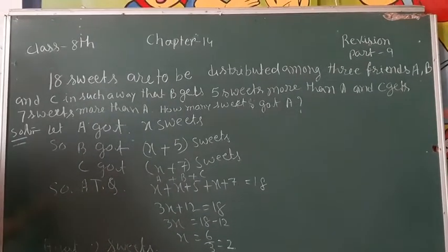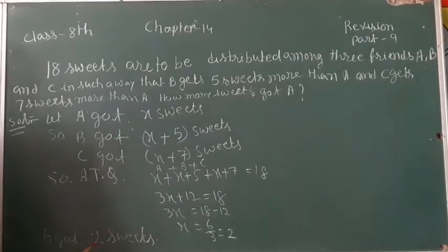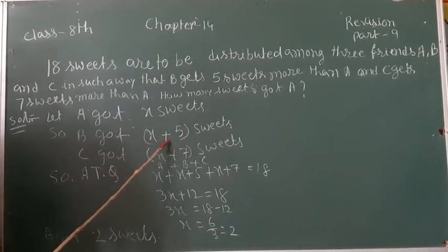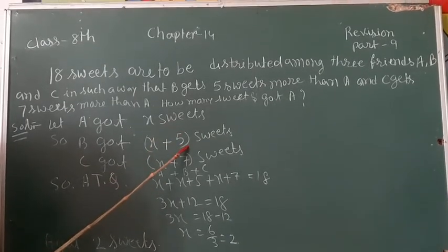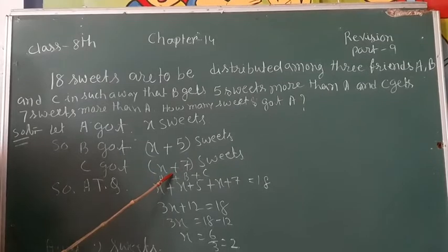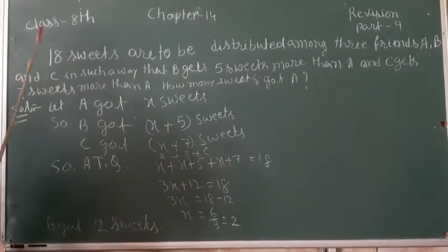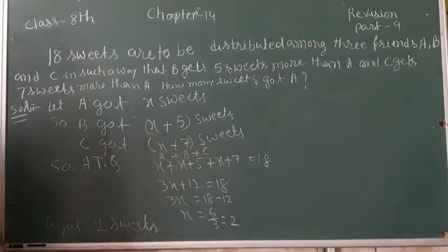But in exam hall, you can check yourself. 2 plus x plus 5, that means 7. 2 plus 7, 9. And x plus 7, it is also 9. So 9 plus 9 is equal to 18 sweets. This is the answer.